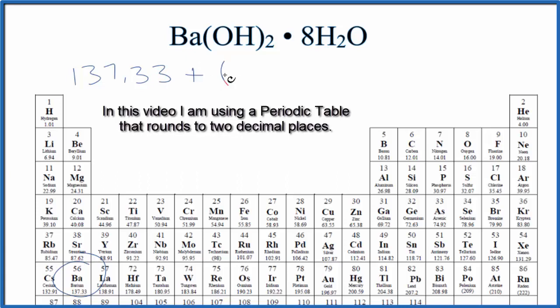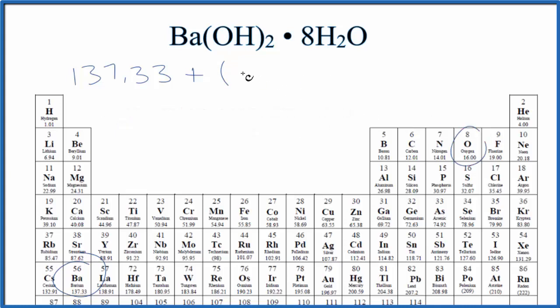Plus, oxygen is 16.00 grams per mole, and hydrogen is 1.01 grams per mole. I have two of these hydroxides—the two that goes to the whole hydroxide here. So we have two out here.